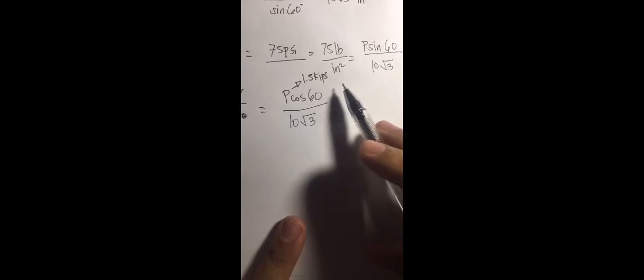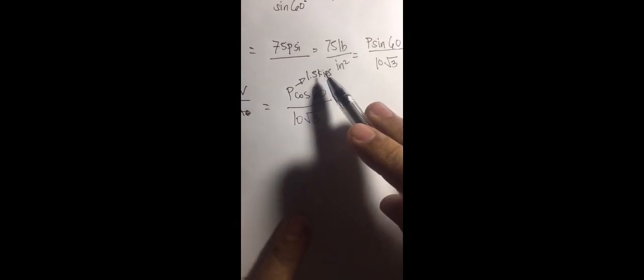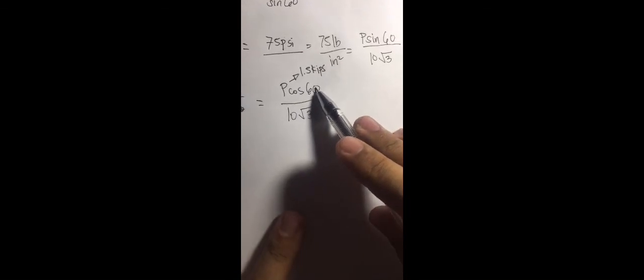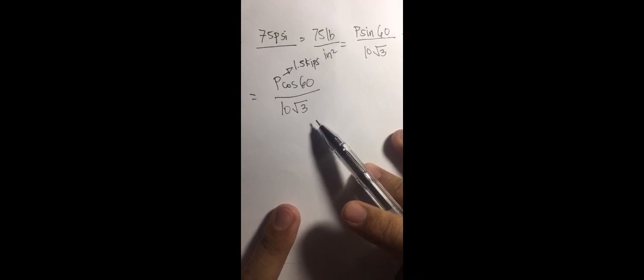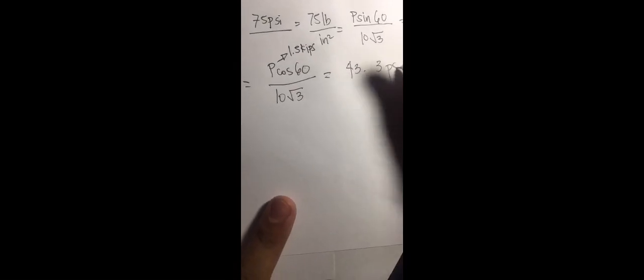So that's equal to 1,500 pounds, times cosine of 60, divided by 10 square root of 3 inches squared. So the answer, that's 43.3 PSI, and this is the final answer for the shear stress for B.